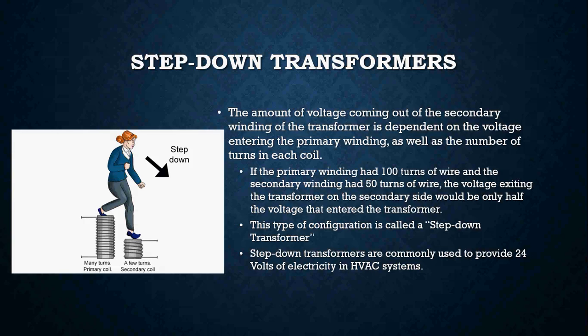A prime example of a step-down transformer in HVAC is a 120-volt primary to a 24-volt secondary. We use step-down transformers to provide 24 volts of electricity to power up our thermostats and to power up coils on relays, contactors, and things like that. A step-down transformer is really nothing more than a transformer that has more windings on the primary side and fewer windings on the secondary side.